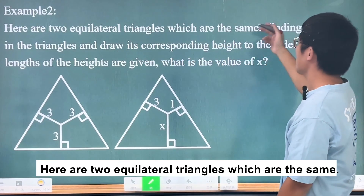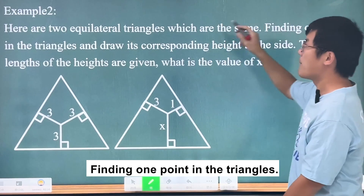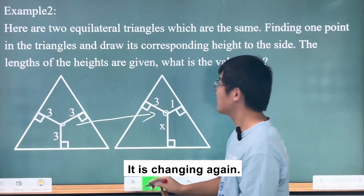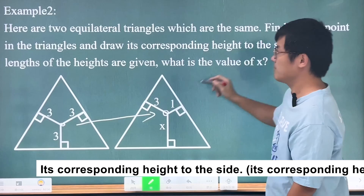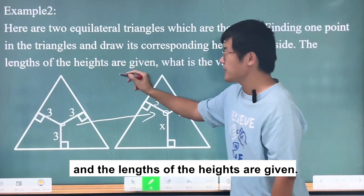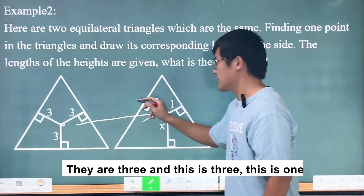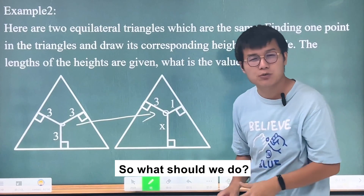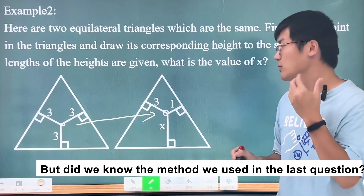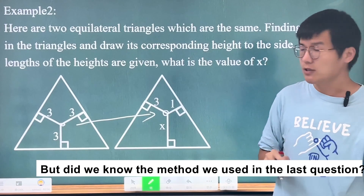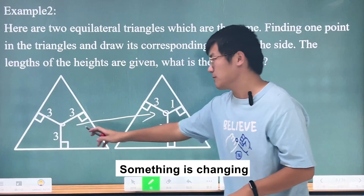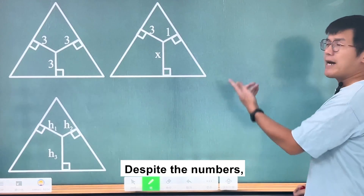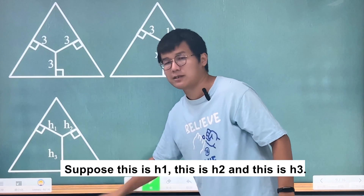Here are two equilateral triangles that are the same. Find one point inside each triangle — this is the point, and this is the point; the point is changing position. We look at each point's corresponding heights to the three sides, and the lengths of those heights are given. All three heights are given: this is 3, this is 1, and this is what we need to find.